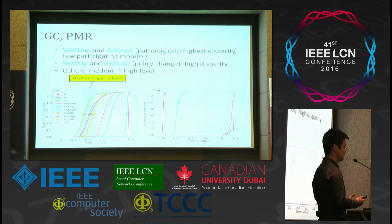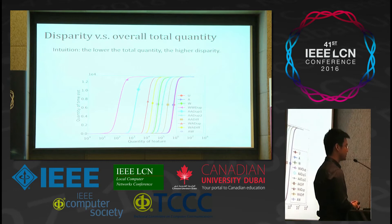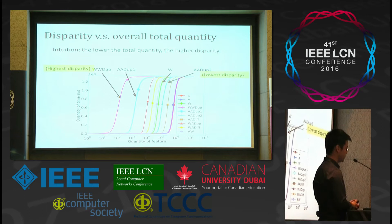This result shows that BGP data are very unbalancedly distributed on the internet. There is a simple intuition that the lower the total quantity, the higher the disparity. We show the disparity and the overall total quantity of each feature — the x-axis is the quantity of the feature and the y-axis is the quantity of time slots. We can see that WWDUP and ADUP1, which have the highest disparity, have the lowest total quantity, confirming the intuition. However, ADUP2, which has the lowest disparity, is not the highest in total quantity. So this intuition is correct only when total quantity is very low.